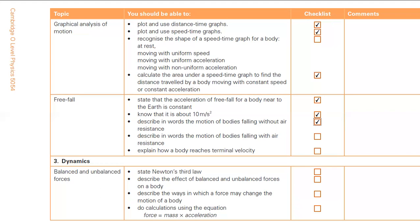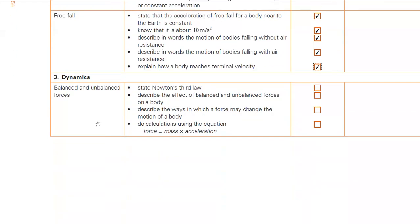Eventually the air resistance equals the weight, the resultant force becomes zero, acceleration becomes zero, and the body falls at constant terminal velocity. When a parachute opens, the large surface area means air resistance exceeds weight, so the resultant force acts upward — opposite to motion — acting like brakes, and the body decelerates.